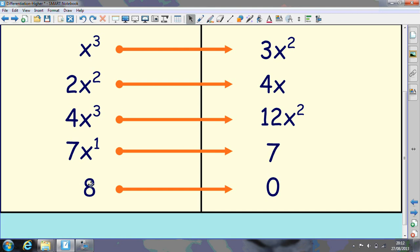And whole numbers we think of as y equals 8, which is just a straight line. So a straight line across at y equals 8 has no gradient. So whenever you differentiate a whole number it comes out to be 0.